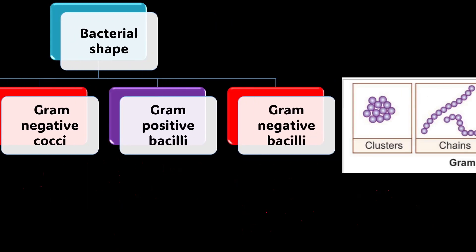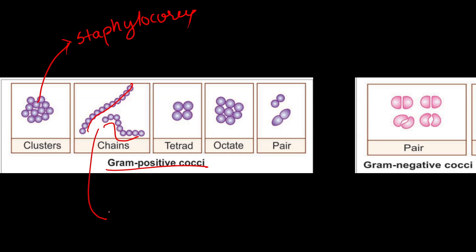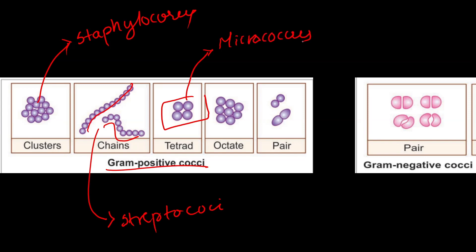Now let's look at the arrangement patterns associated with images. Gram positive cocci can be present in clusters — the example is Staphylococcus. In chains, the example is Streptococcus. In tetrads — a group of four — the example is Micrococcus, which is a commensal and does not cause infections. They can also be present in pairs or octets.